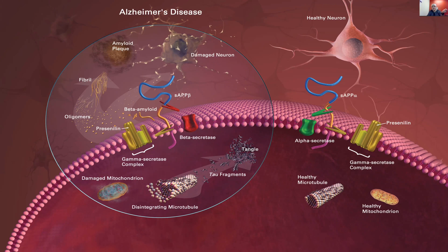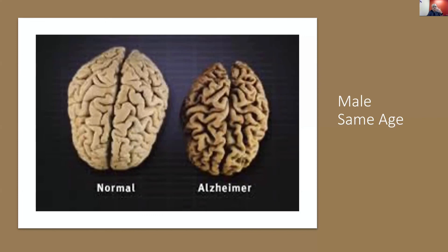This image shows beyond a shadow of a doubt the difference. On the left is a normal male brain; on the right is the same-age male who died of complications of Alzheimer's disease. Those dying neurons cause atrophy and the brain literally shrinks. The smallest brain we have seen through the brain bank is about 530 grams; the brain on the left is 1,300 grams by contrast. A normal healthy brain is about 1,300 grams.